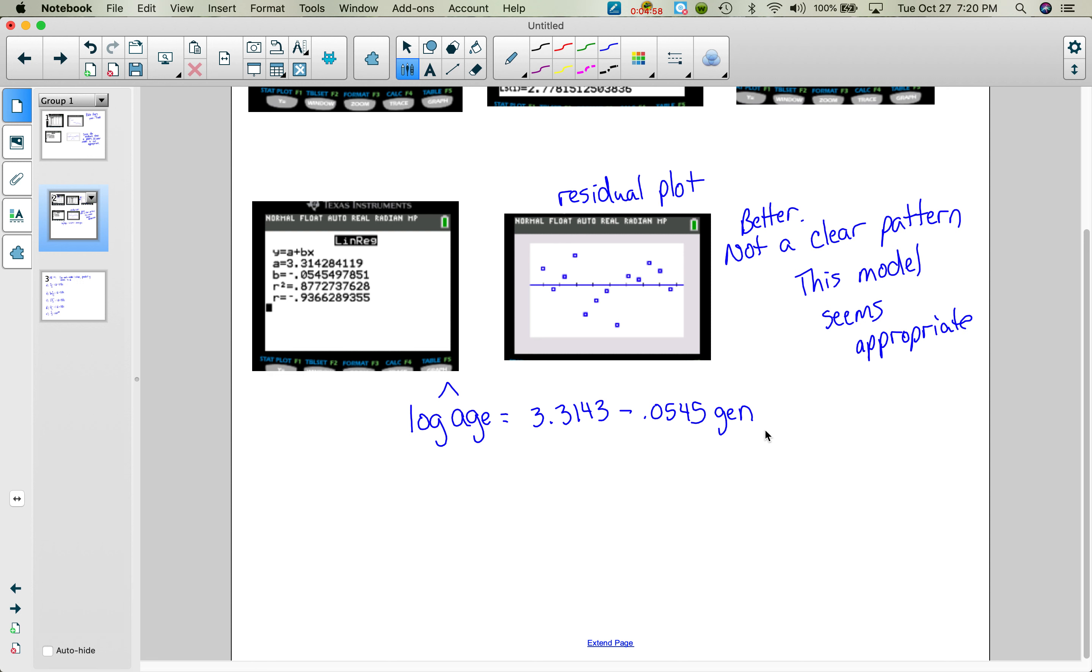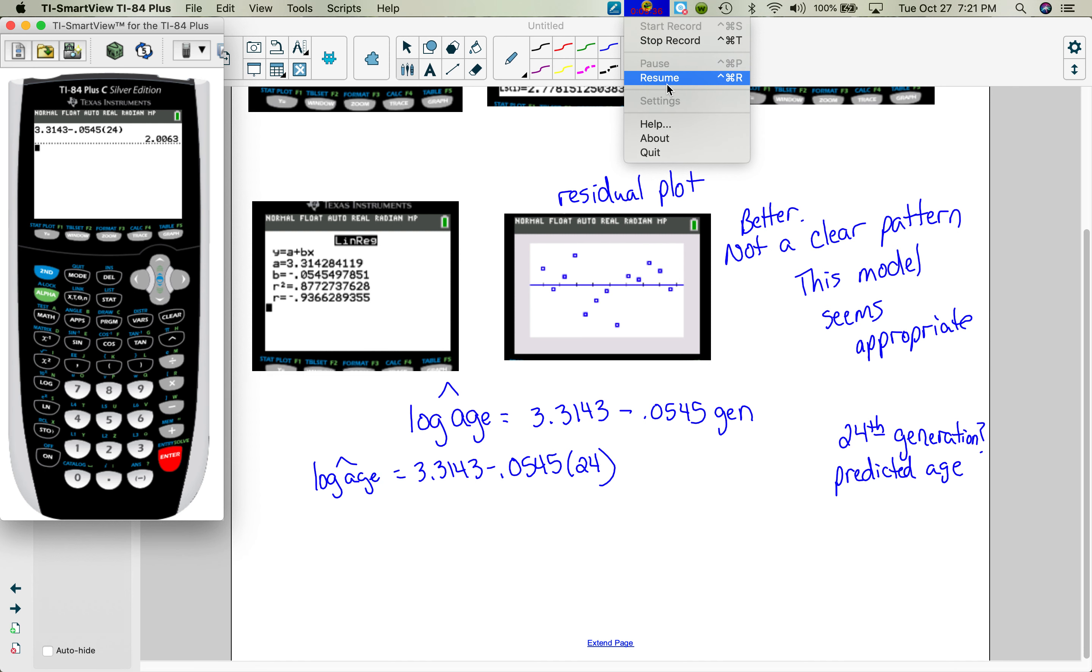So say I wanted to predict the, well, how about if we just did the 24th generation? So that's a tiny bit of extrapolation, because our data went through the 23rd generation. So say we wanted to know what would be the predicted, the predicted age. So we want to find predicted age for the 24th generation. So I'm going to take log age hat equals 3.3143 minus .0545 times 24. So when I do that, I get that my log age hat equals 2.0063.